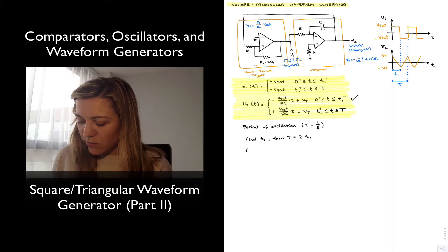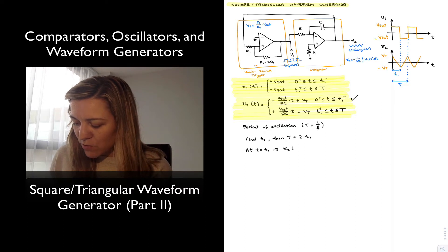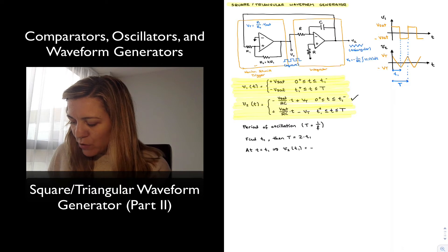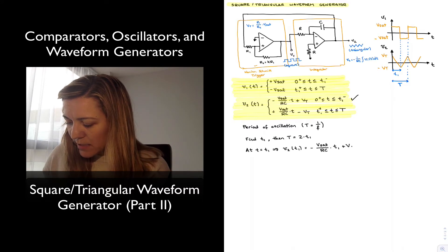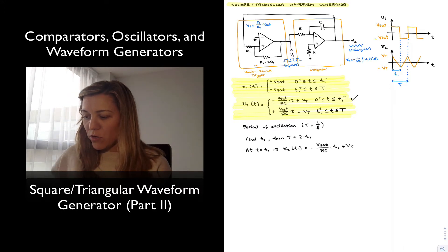So I can say that at T equals T1, the value of V2 at T1, which is equal to negative vSat over RC times T1 plus vT, we know that that value is going to be equal to, that's this point over here, so it's equal to negative vT.